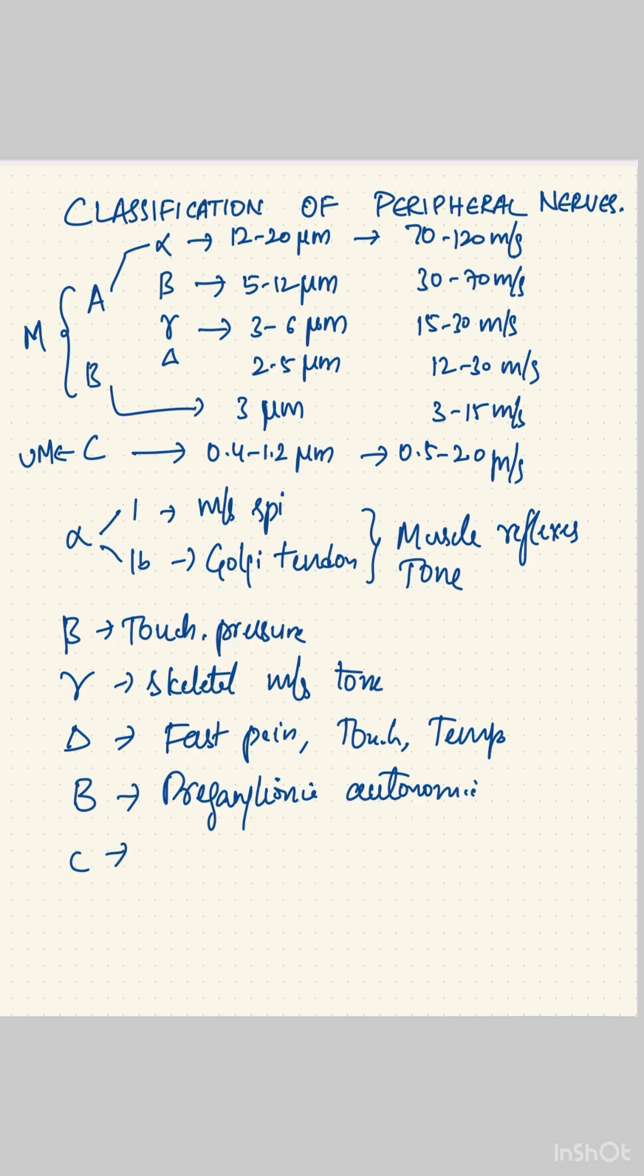C fibers, as they are unmyelinated, conduct slow pain, pruritus, touch, temperature, and post-ganglionic sympathetic fibers.